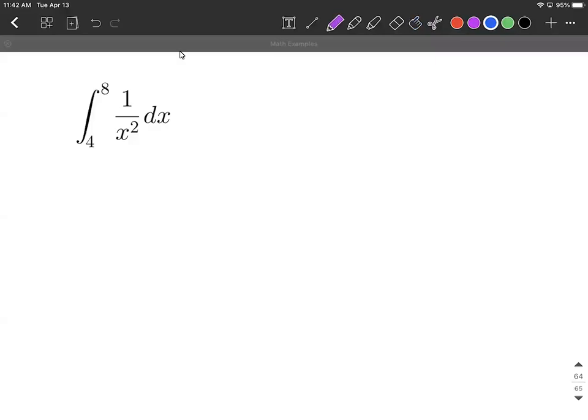Let's evaluate a definite integral between 4 and 8 of 1 over x squared. It's going to be easiest if we first rewrite it so that we can see that x is raised to the negative second power.